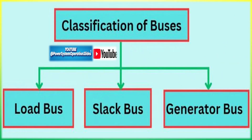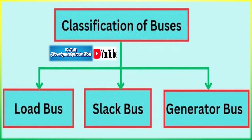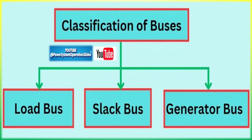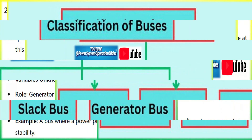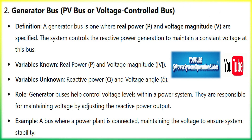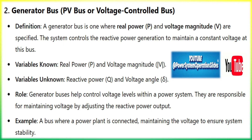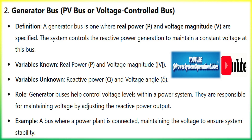Load bus — PQ bus. The load bus is a bus where real power P and reactive power Q are specified, but the voltage magnitude and phase angle need to be determined. Variables known: real power P and reactive power Q. Variables unknown: voltage magnitude V and voltage angle. The majority of buses in a power system are load buses because loads consume both active and reactive power. In load flow analysis, this is where consumer demand is modeled.